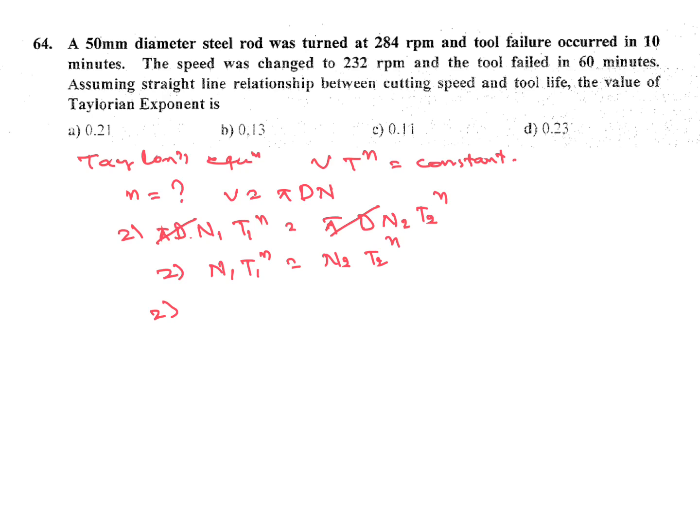D is same, so pi d pi d cancel. N1 T1 to the power n equal to N2 T2 to the power n. Putting the values we will get 284 into 10 to the power n equal to 232 rpm into 60 minute to the power n.